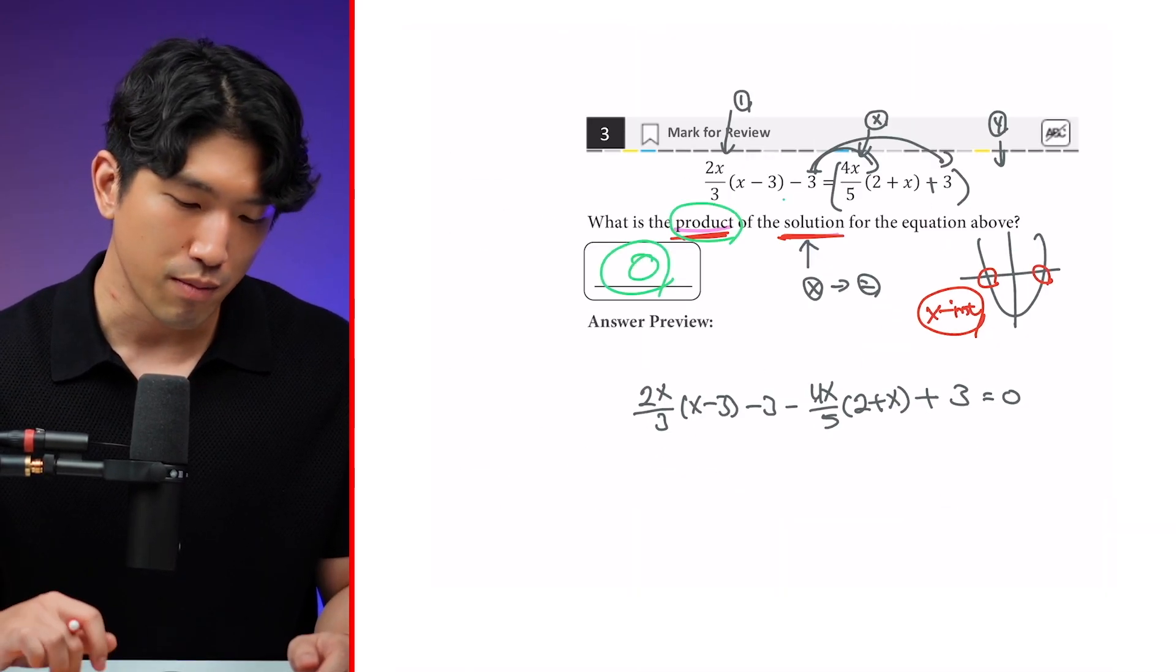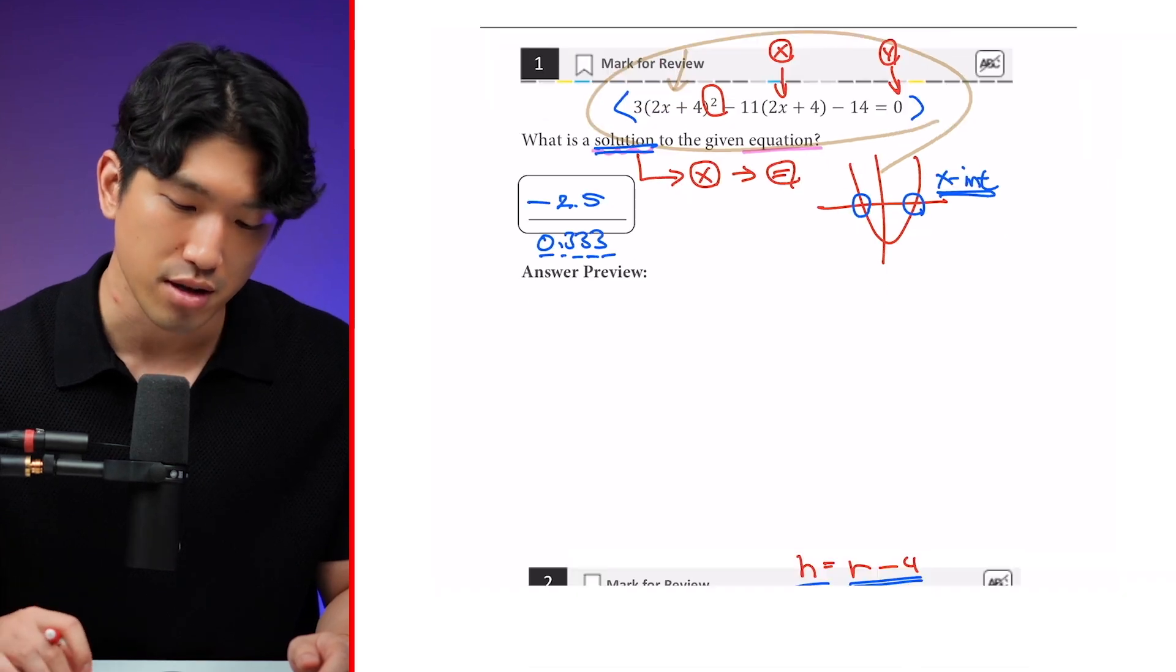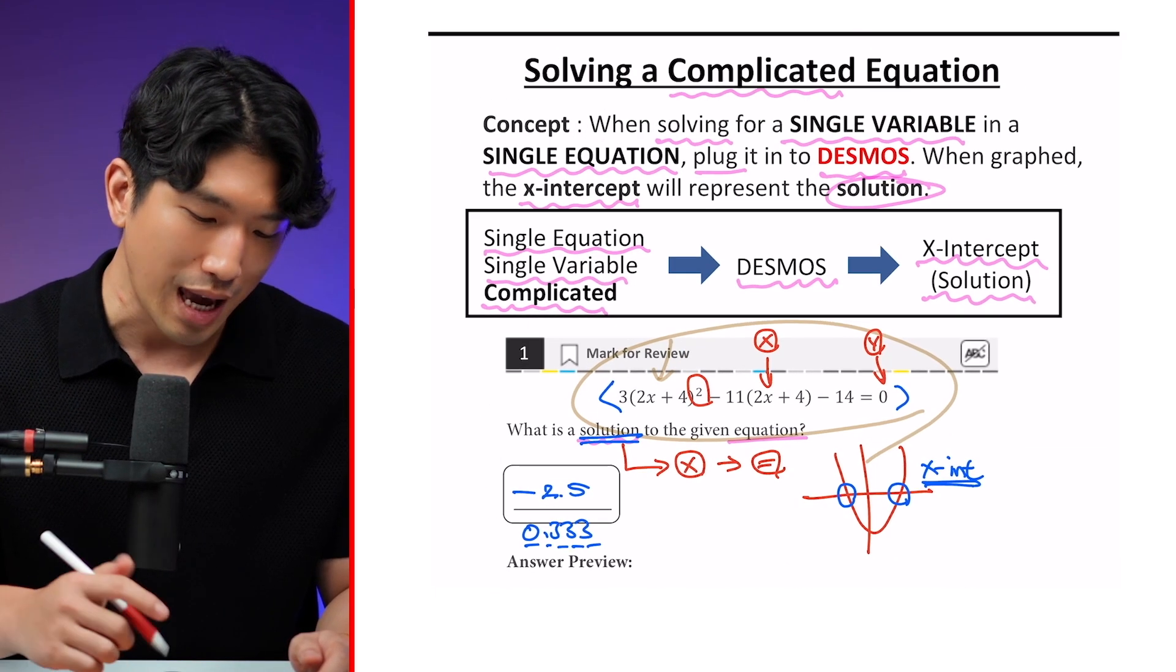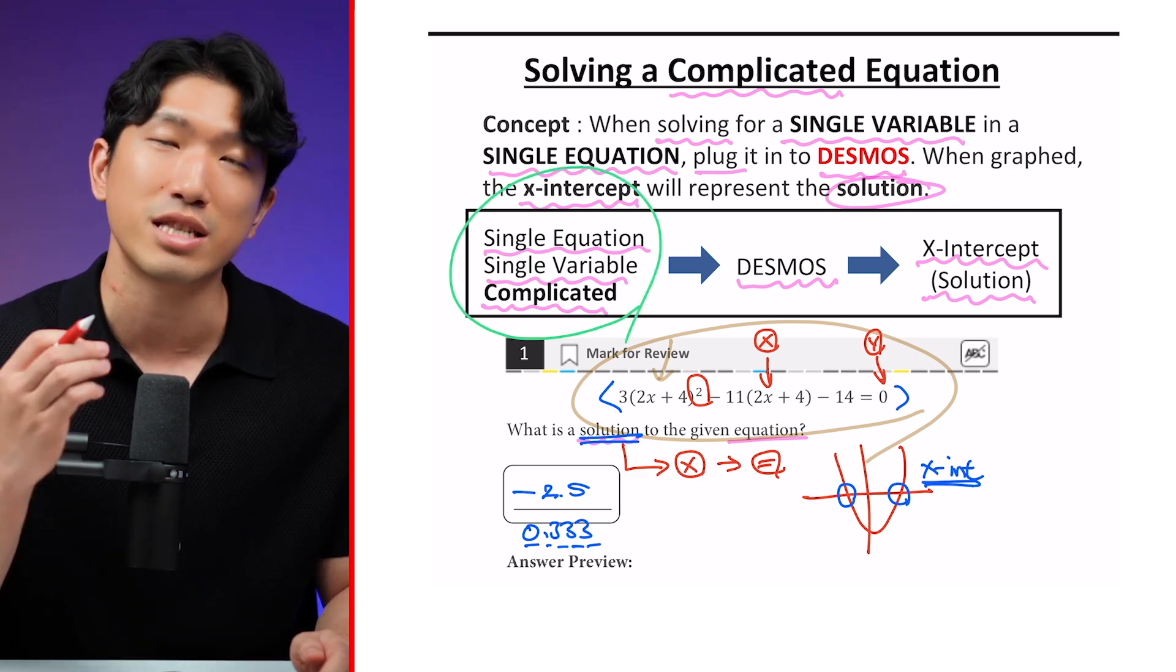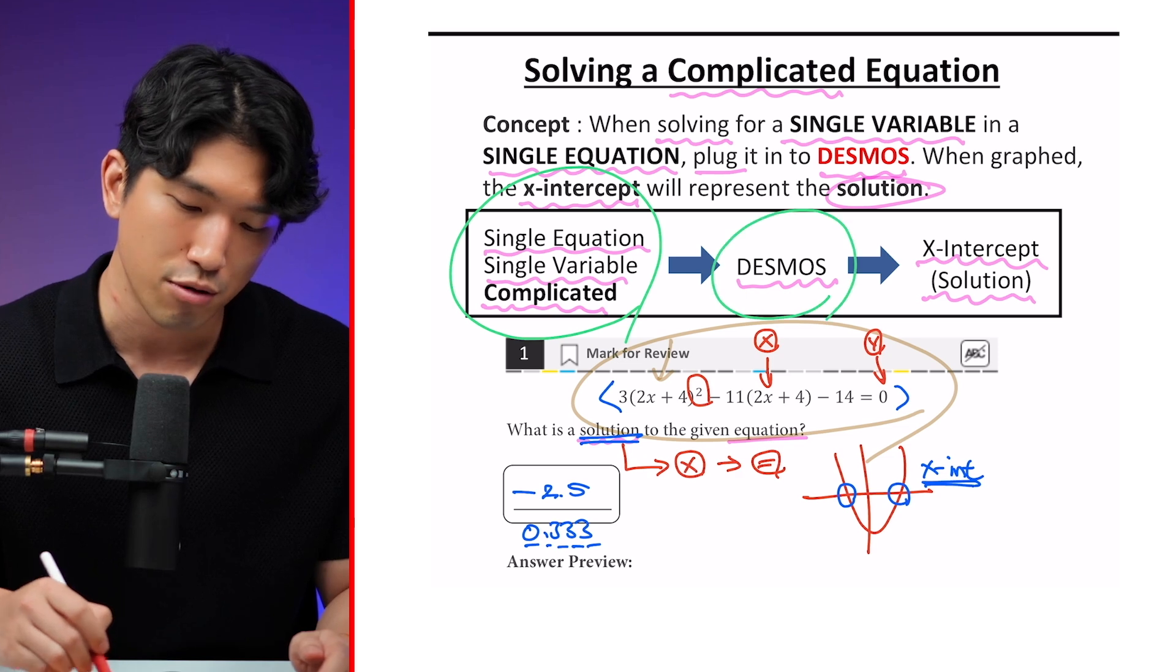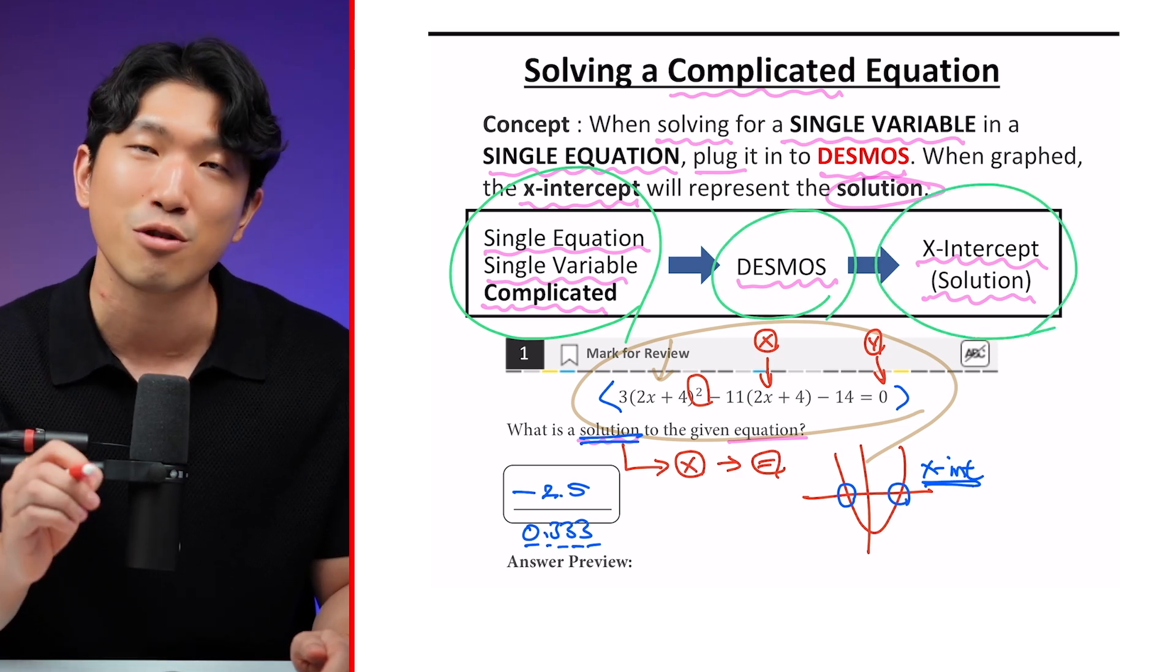So the main takeaway from this video is, for some questions, it's going to be very obvious. For other questions, it might not be. But what you need to remember is, anytime you see a single equation and a single variable and it looks complicated, then you can simply pop it into Desmos and go to the x-intercept and quickly get the answer.